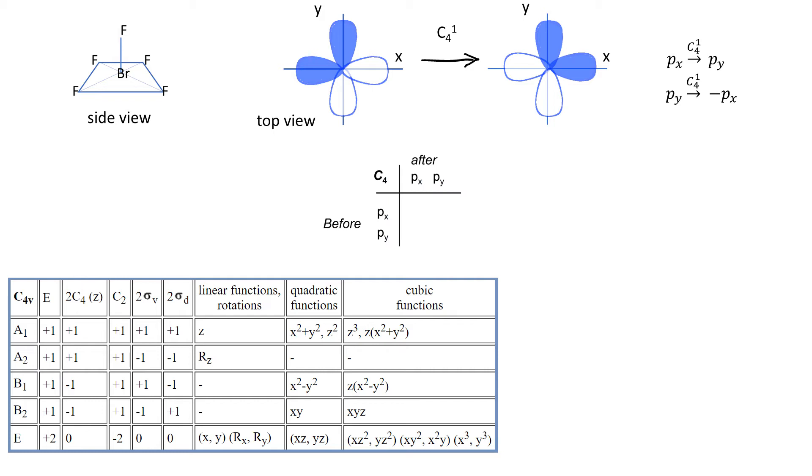We can draw it in the form of a table. We got before and after, we can fill it in. So we start with Px. After the transformation it becomes 0Px and 1, that is fully, Py.